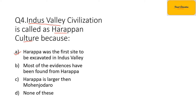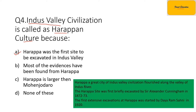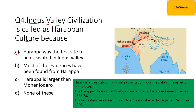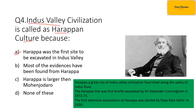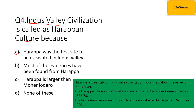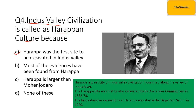Harappa is a great city of Indus Valley Civilization which flourished along the valley of the Indus River. Sir Alexander Cunningham, who is considered the father of archaeology in India, first excavated it in 1872–73, and extensive excavation followed in 1920.